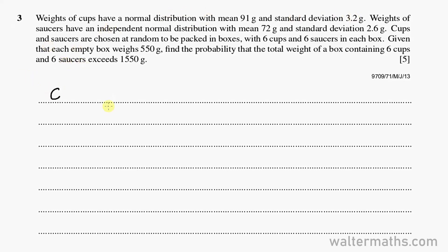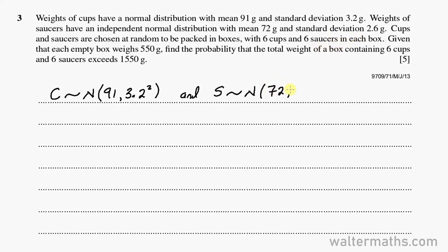We've got cups whose weight is normally distributed with mean 91 and variance 3.2 squared. We also have saucers with weight normally distributed with mean 72 and variance 2.6 squared. The question says that in each box there are 6 cups and 6 saucers — these are repeated observations of each single variable — and the mass of an empty box is 550 grams.